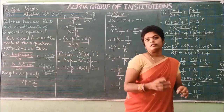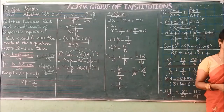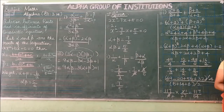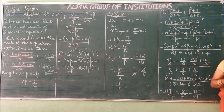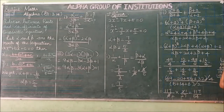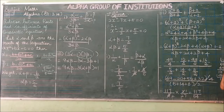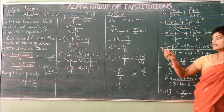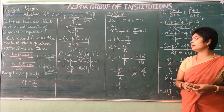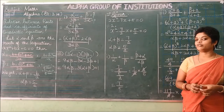Look at your book, exercise 3.14, second problem. The roots of the equation 2x² − 7x + 5 = 0 are alpha and beta. Without solving the roots, find the required expressions. The given equation is 2x² − 7x + 5 = 0.